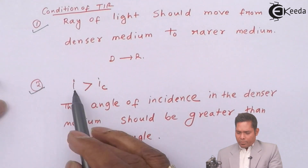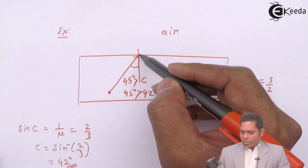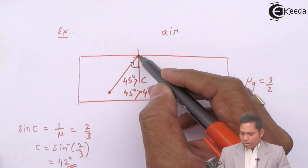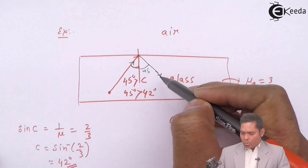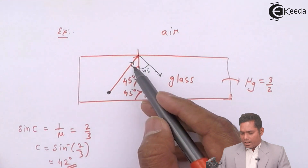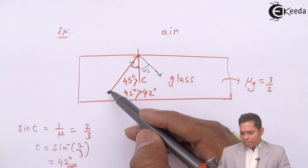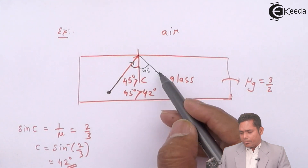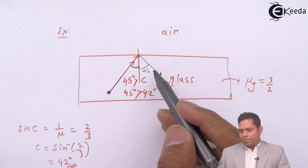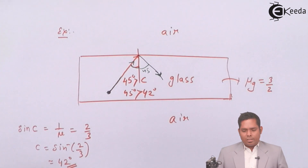Therefore, this ray will not come out because the angle of incidence is greater than the critical angle — the condition is satisfied, so there is only reflection, no refraction. The ray reflects back at 45 degrees inside the glass. If a bulb is lit inside a glass slab and rays strike the surface at 45 degrees, they are reflected back and no light comes out into the air.